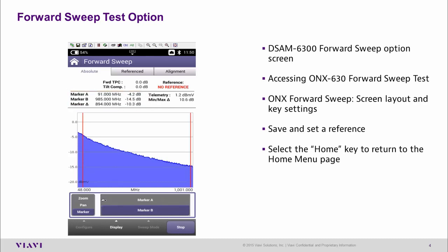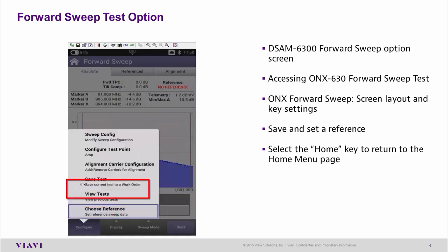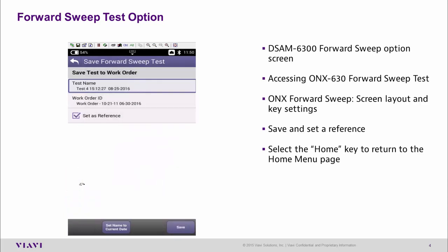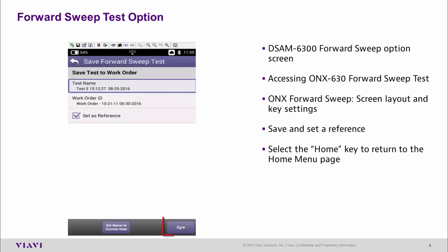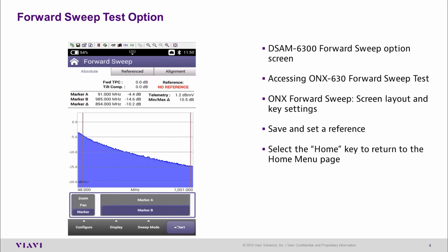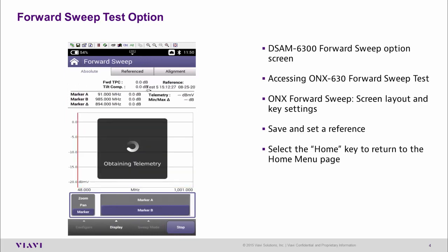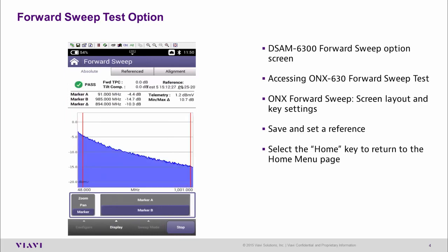The next thing we probably want to do is save the test and set a reference. I'm going to stop the test, at which point the configure option becomes available, and under configure we can save this test. I'm now going to give this test a new name — I'm going to call it test 5 — and here we can see the date and time stamp that the test has automatically added. Select OK and save it. Now when I start the test we'll see test 5 with the date and time stamp and the test is running.